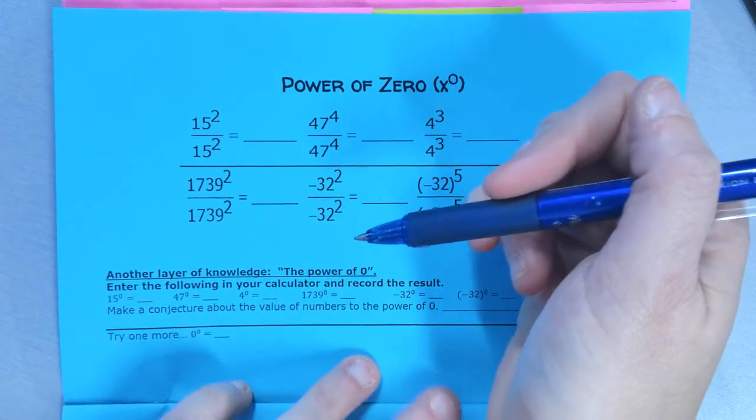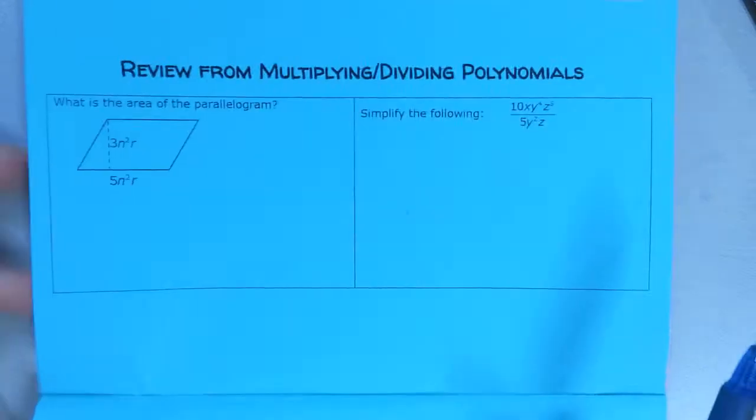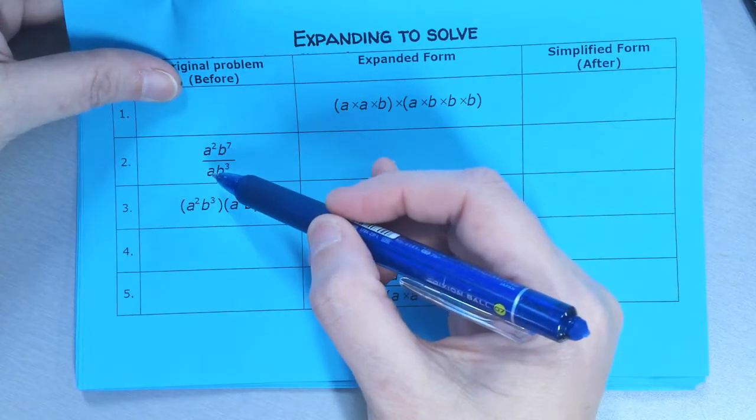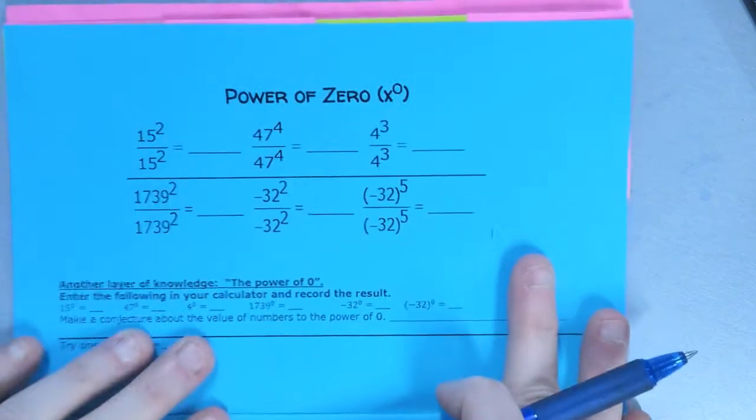Then we also learned about the quotient of powers rule, which is where we see division. So when we divide the coefficients, keep the base, subtract the powers. Now we're going to learn about our third one.